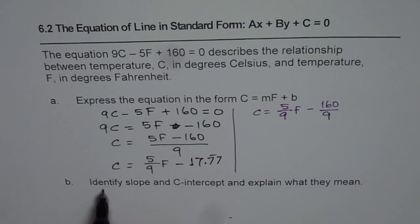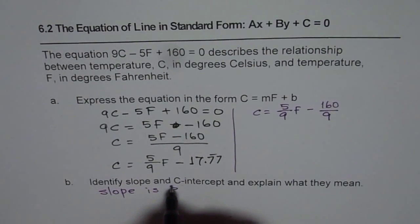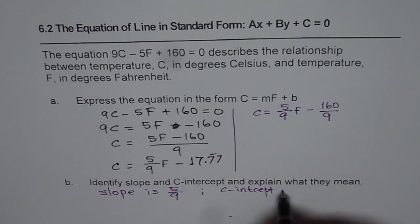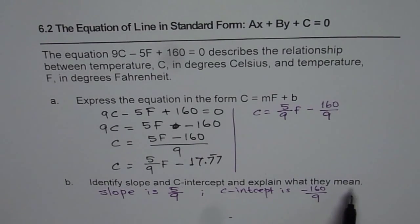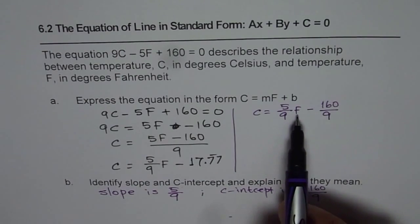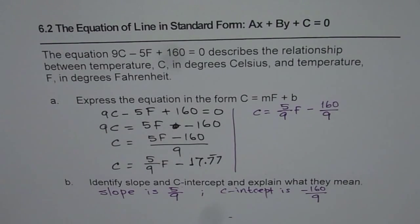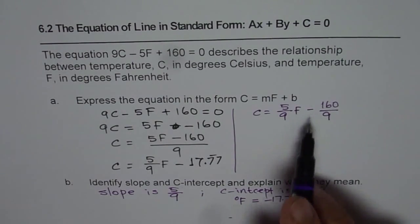So we can write down the answer for Part B: slope is 5 over 9 and C-intercept is minus 160 over 9. The C-intercept means that when Fahrenheit is 0, the temperature in degrees Celsius is minus 160 divided by 9, which is approximately minus 17.7 degrees Celsius. That is what this equation tells us about 0 degrees Fahrenheit.